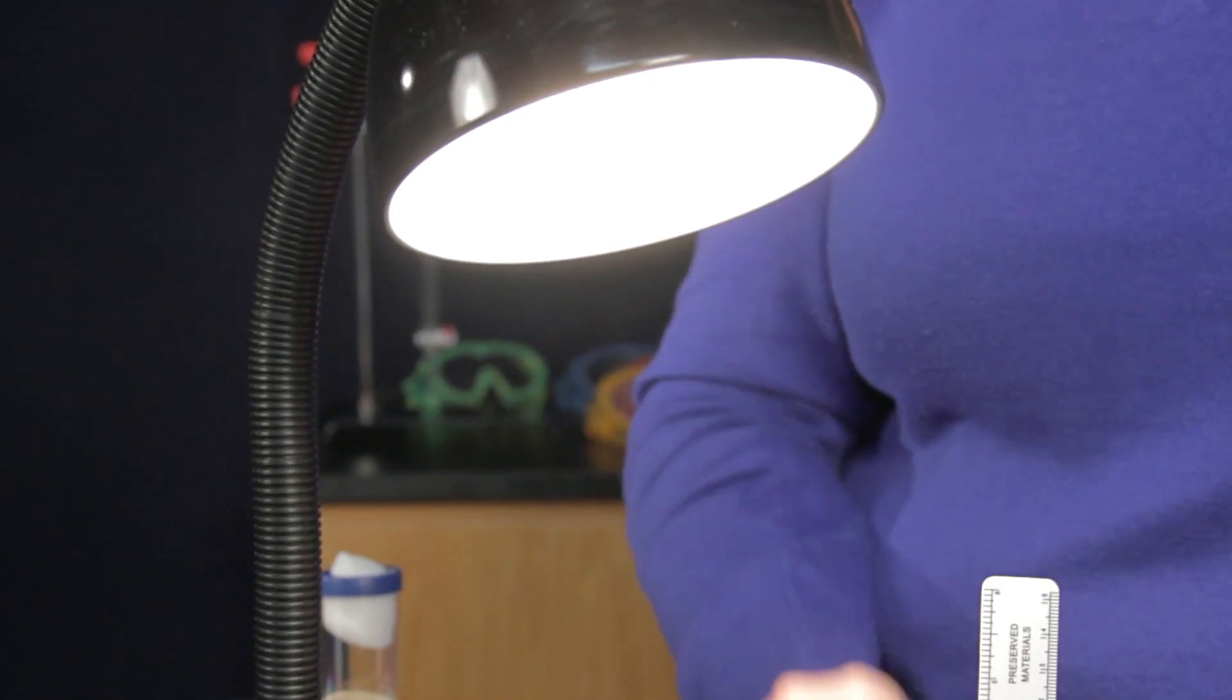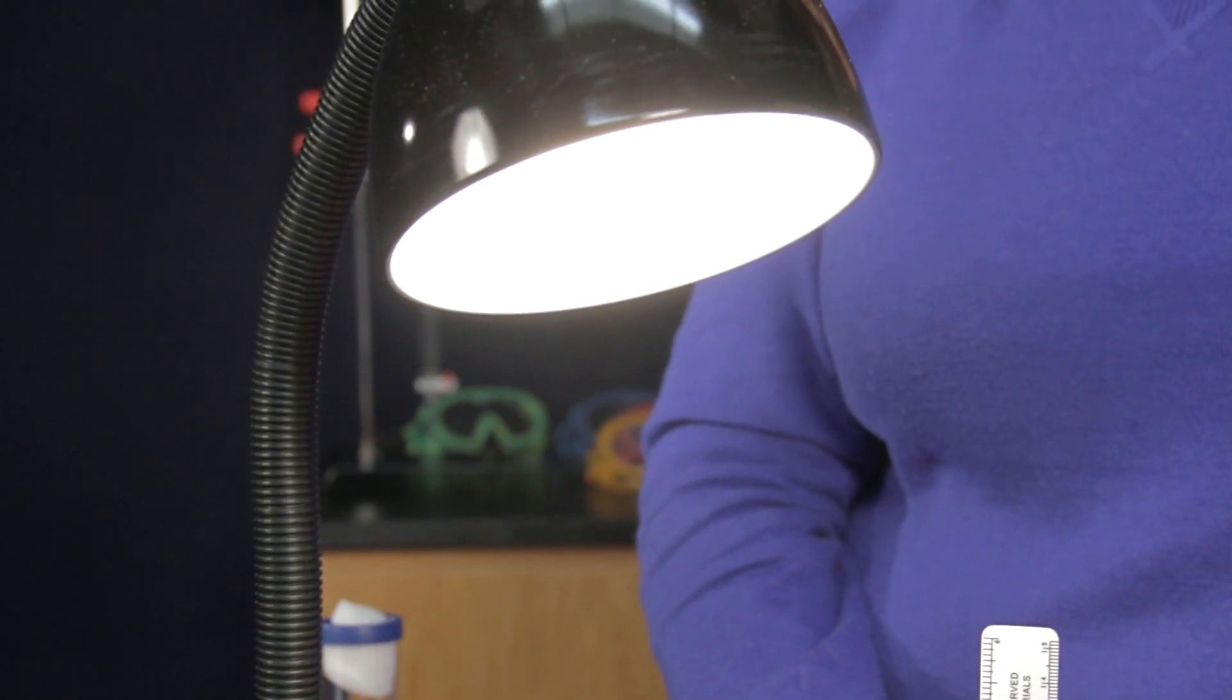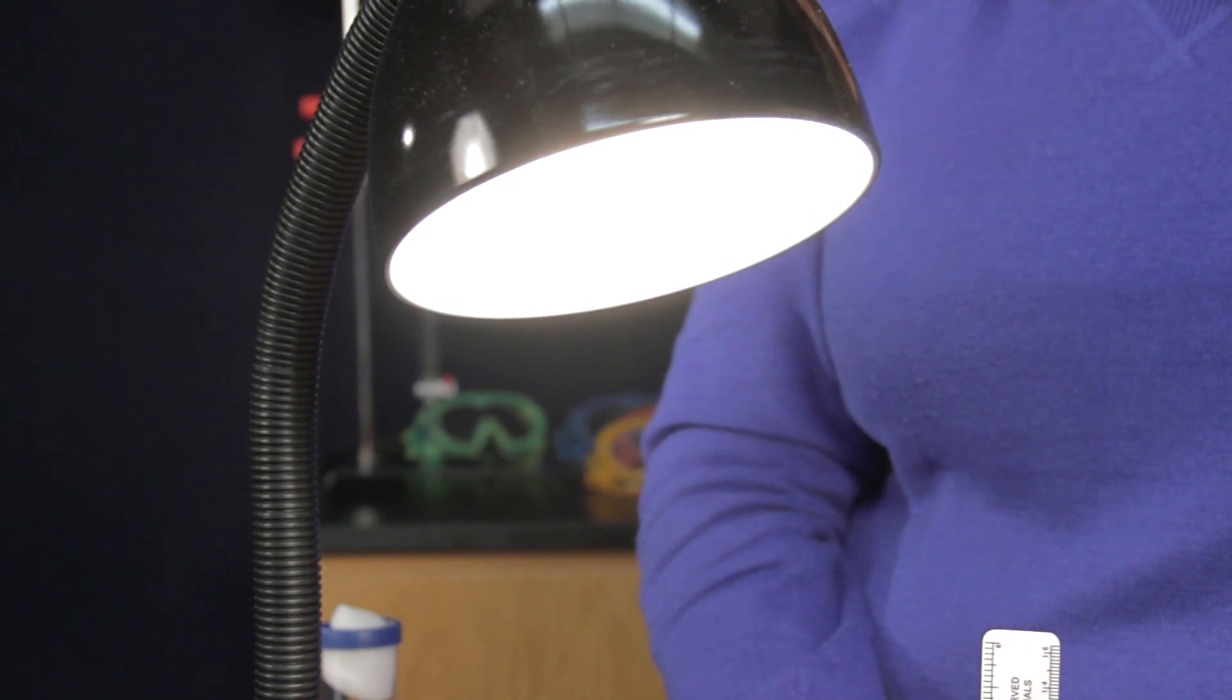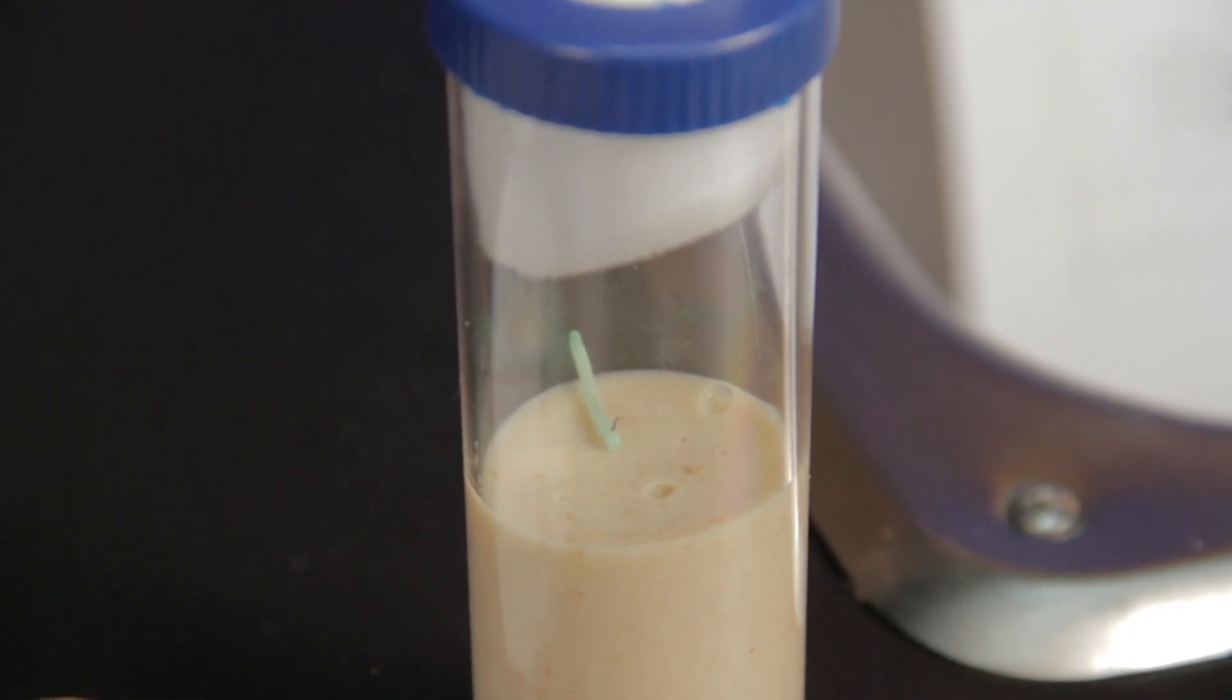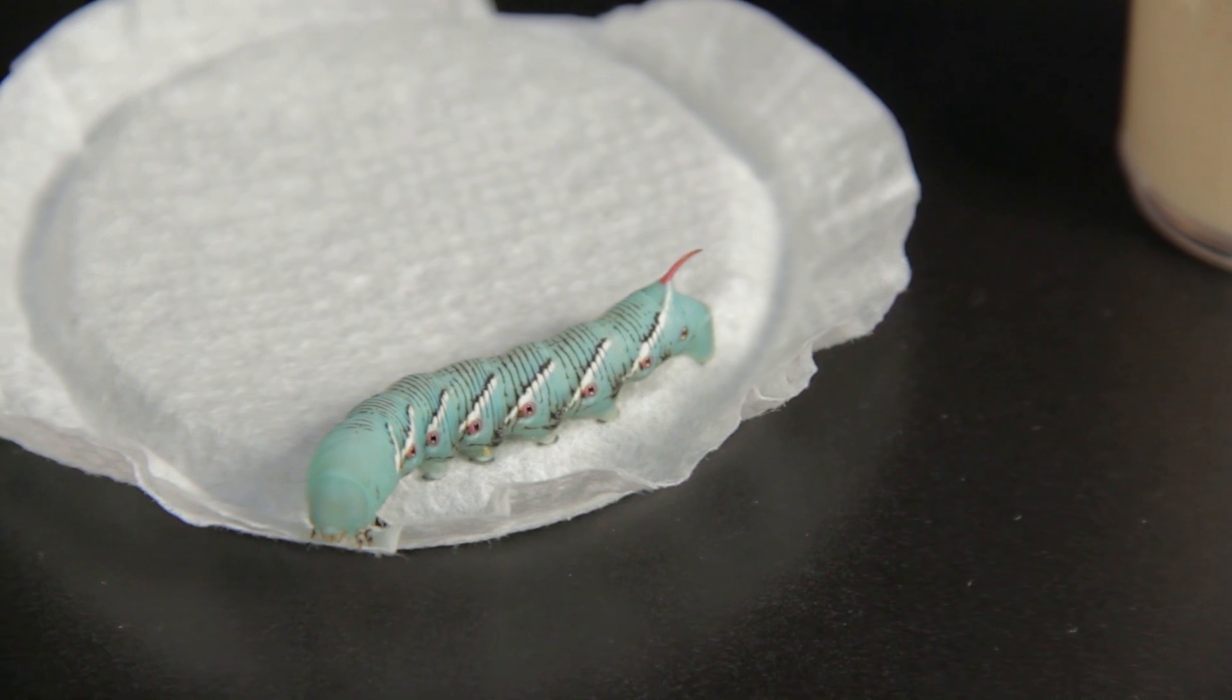Keep the larvae in constant light to avoid an extended pupil stage. Observe the larvae eat, grow, and molt over the next two to three weeks.